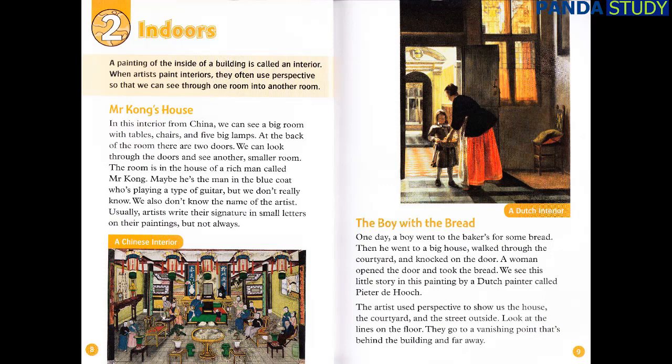One day, a boy went to the baker's for some bread. Then he went to a big house, walked through the courtyard and knocked on the door. A woman opened the door and took the bread. We see this little story in this painting by a Dutch painter called Pieter de Hoog. The artist used perspective to show us the house, the courtyard and the street outside. Look at the lines on the floor — they go to a vanishing point that's behind the building and far away.